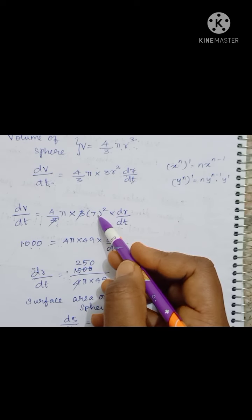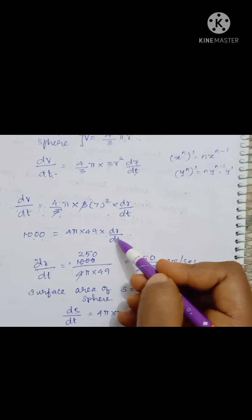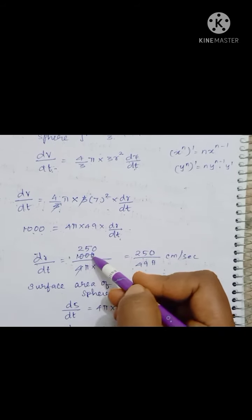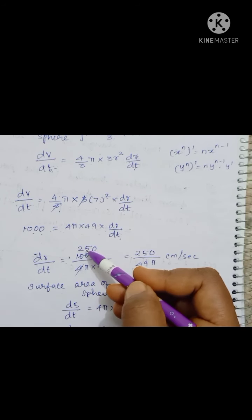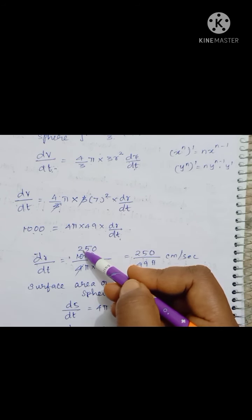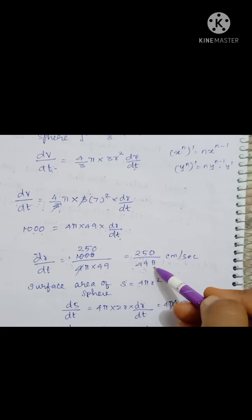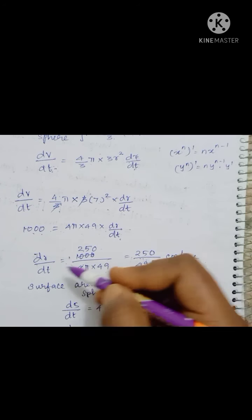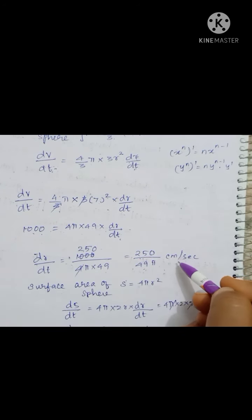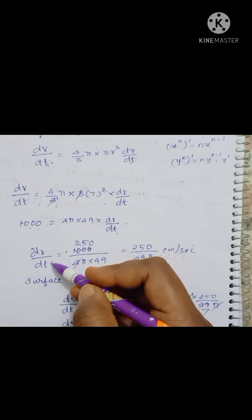So r equals 7. 7² = 49. Substituting: 1000 = 4π · 49 · dr/dt. So dr/dt = 1000 / (4π · 49). Simplifying: 1000/4 = 250, giving dr/dt = 250/(49π) cm per second. This is the rate of change of the radius.